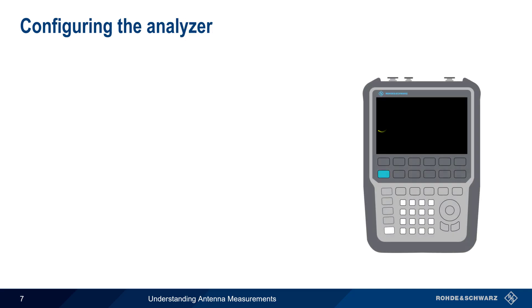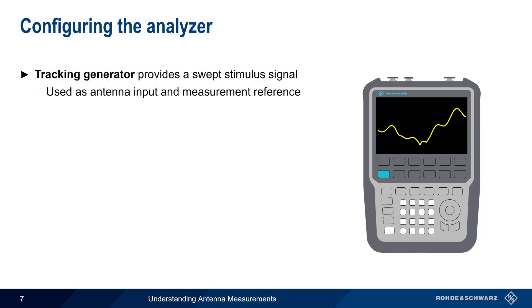Configuring a VNA for antenna testing involves three main groups of settings. The first is configuring the analyzer's internal tracking generator, which provides a sweeping stimulus signal that's used both as the input to the antenna, and as a reference when looking at the amount of signal reflected from the antenna. Note that if the output power of the tracking generator is set too low, this can lead to inaccurate results, especially when measuring via long or lossy feeders.